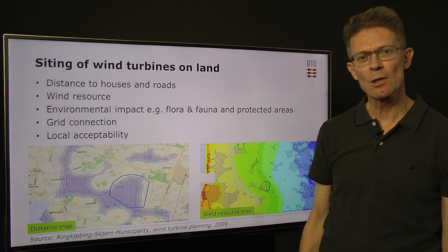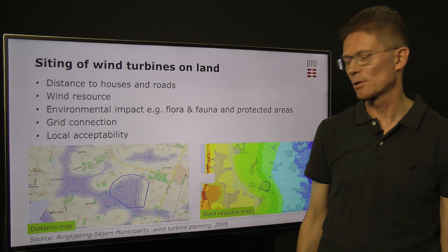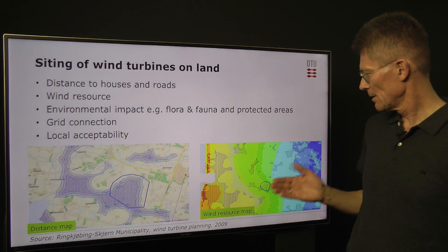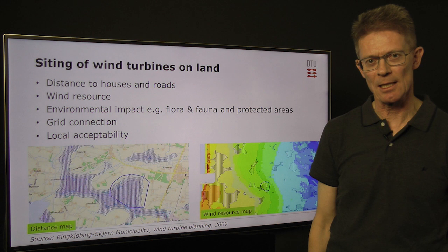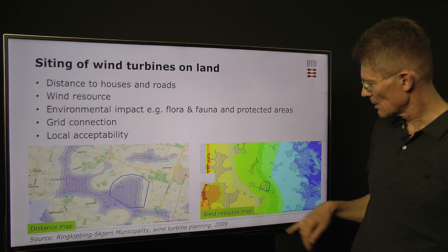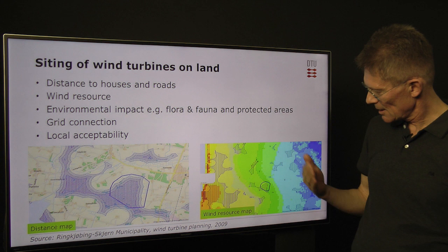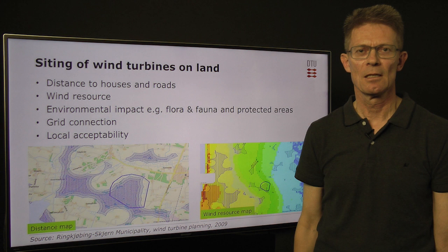A distance map shows where we can put wind turbines depending on whether the turbines are 150, 125, or 100 meters in total height — the taller the turbines, the smaller the available area. A wind resource map shows how the wind resource changes as we move away from the coastline, where it is very high, and further inland where it will be less. This map is overlaid with hatched areas due to other considerations, and this process is repeated with a number of criteria — this is how we do siting of wind turbines on land.